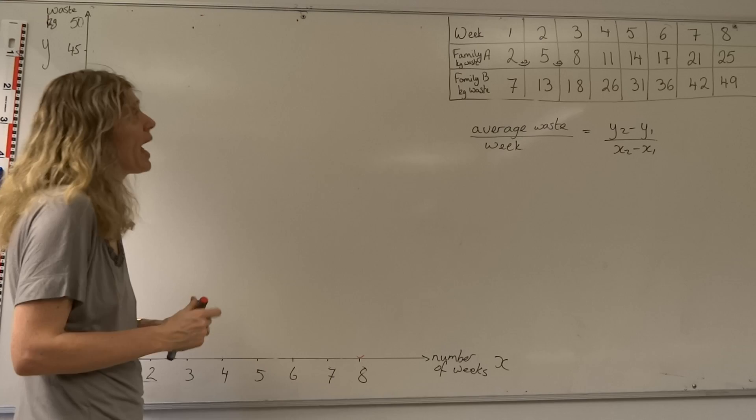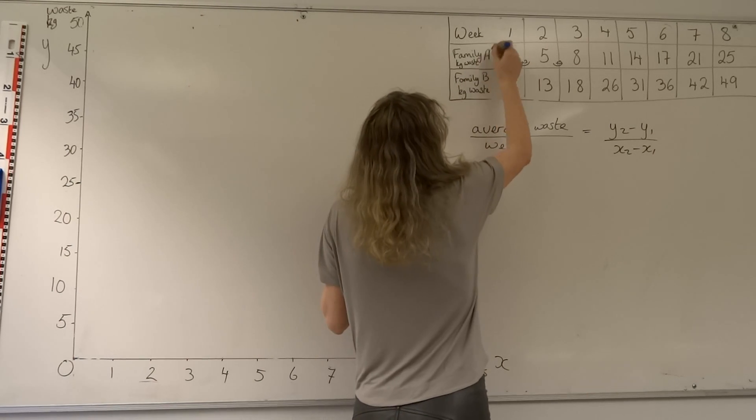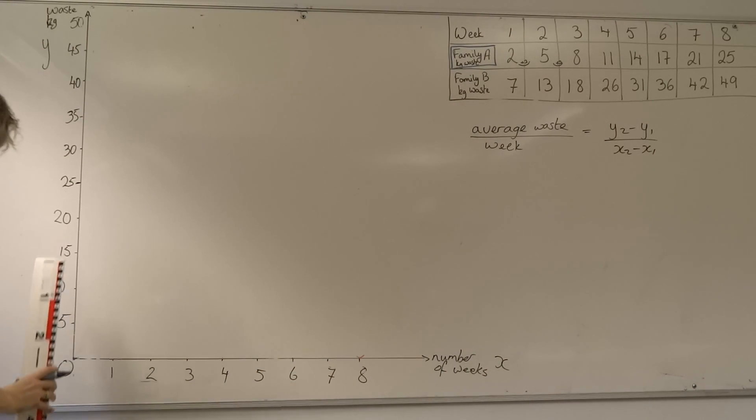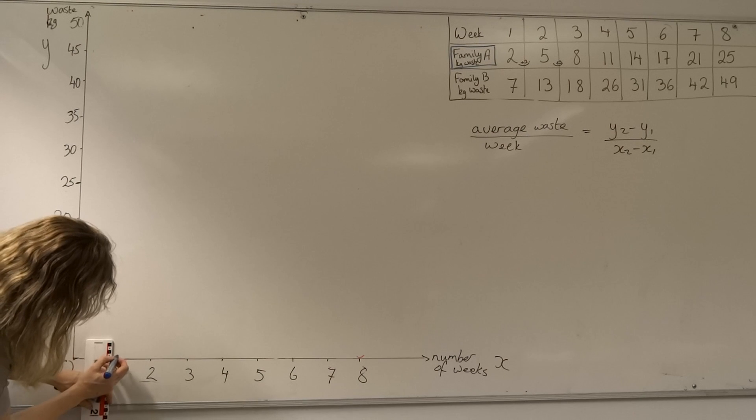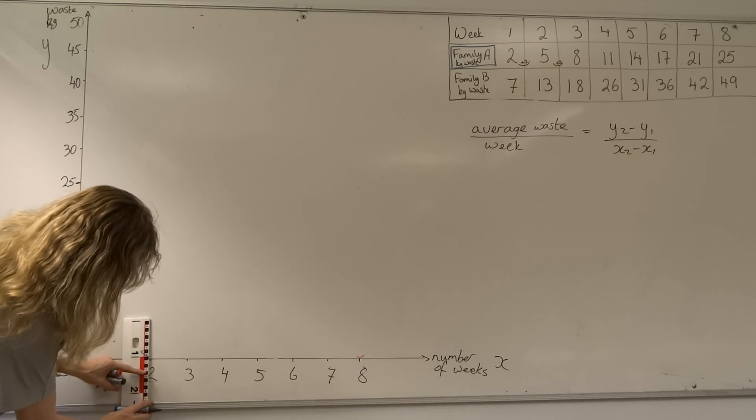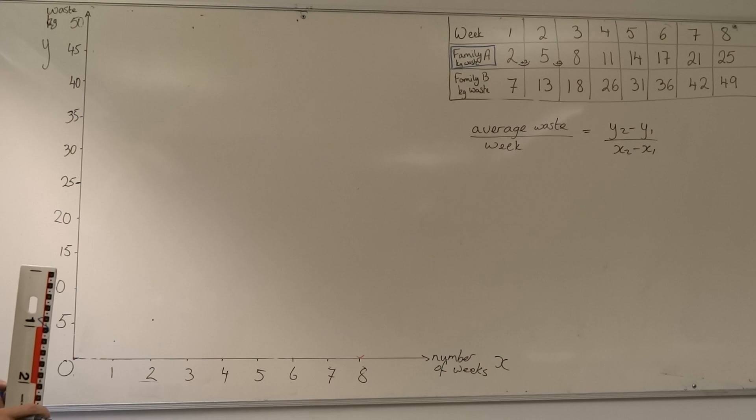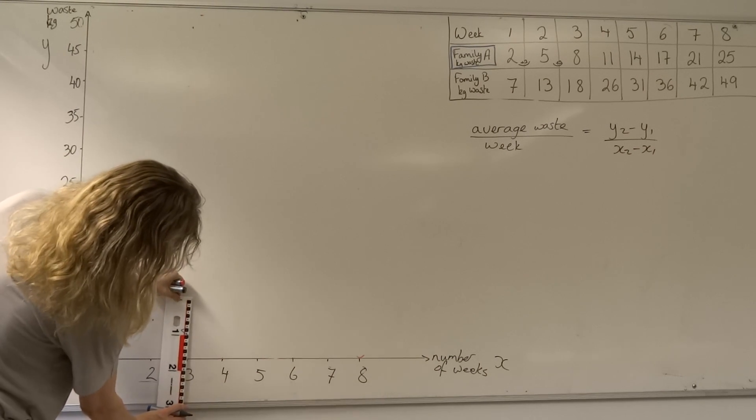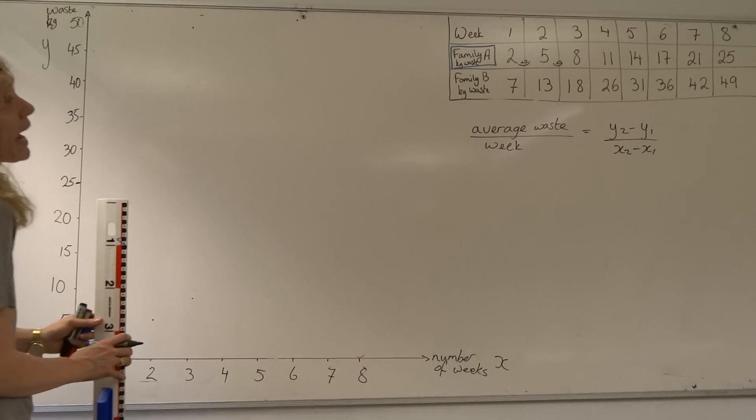Now we've set up our axis, we can actually start putting in the data points. Always useful to use a different color pen. We'll start with family A, we'll make them in blue. In week one, family A threw away two kilos, which is going to be four centimeters on my graph. By week two, they had thrown away eight kilos, which would be 16 centimeters using my ruler. We're using the ruler if you don't have lined paper to make sure that you get as accurate points as you can.